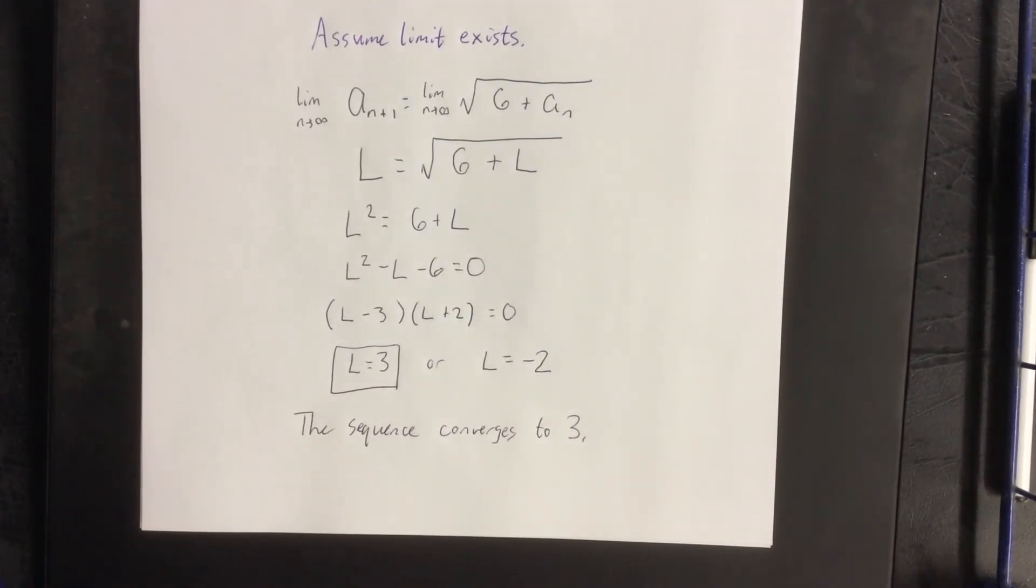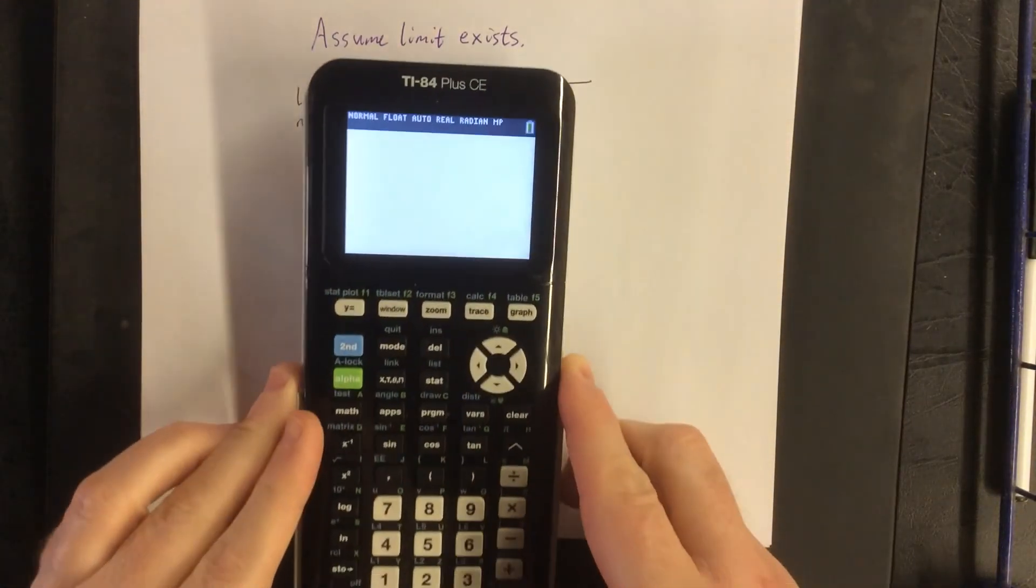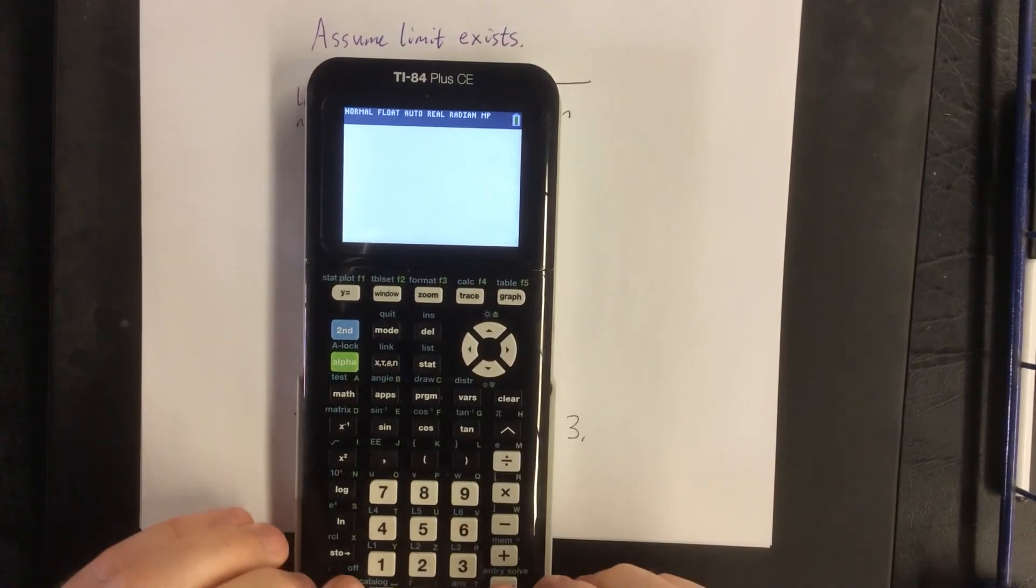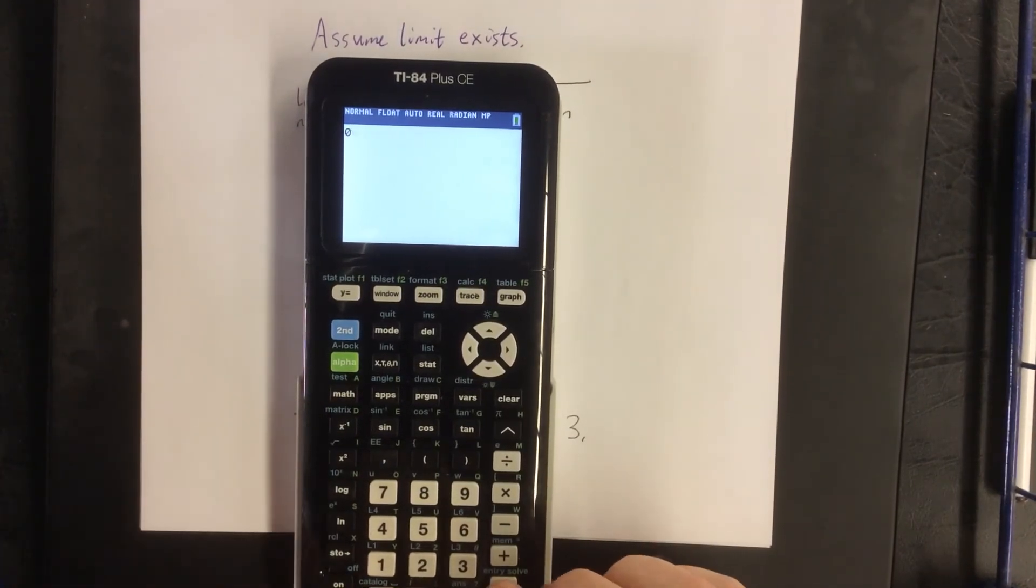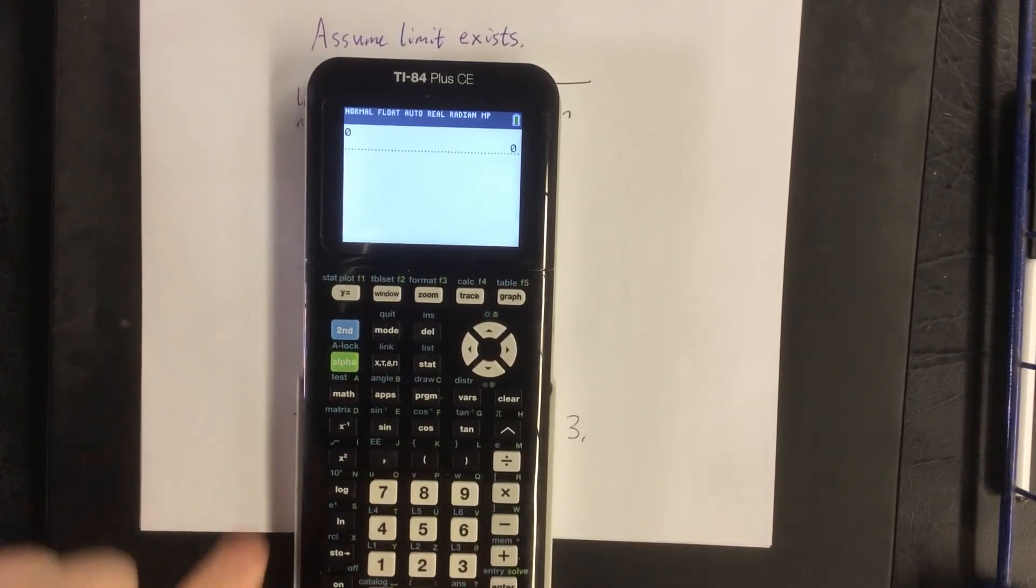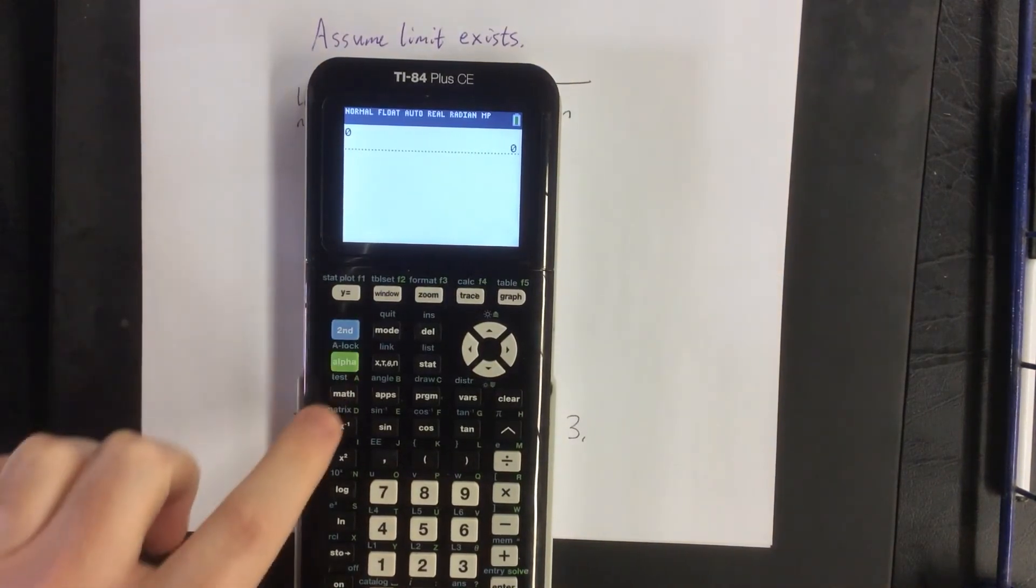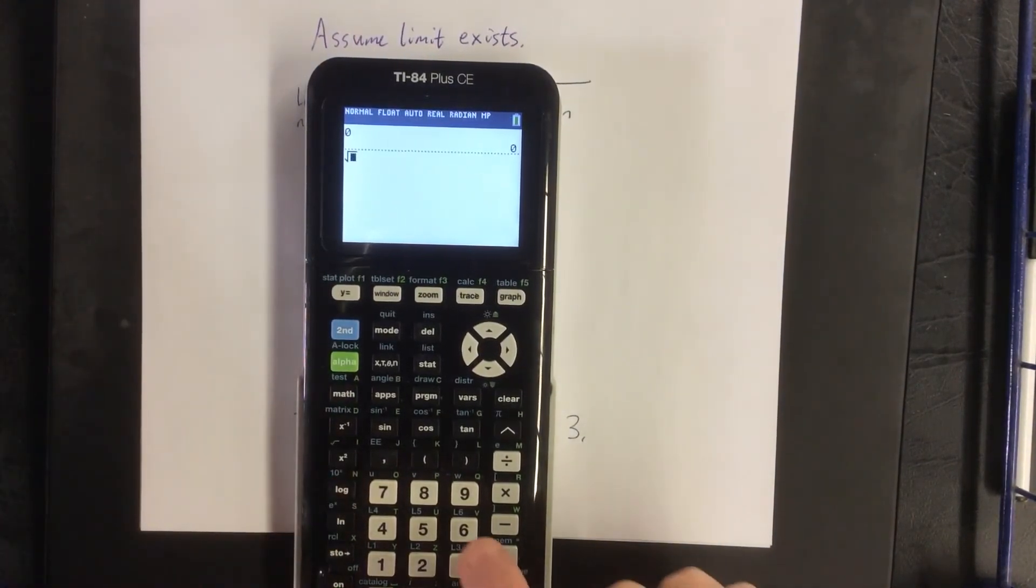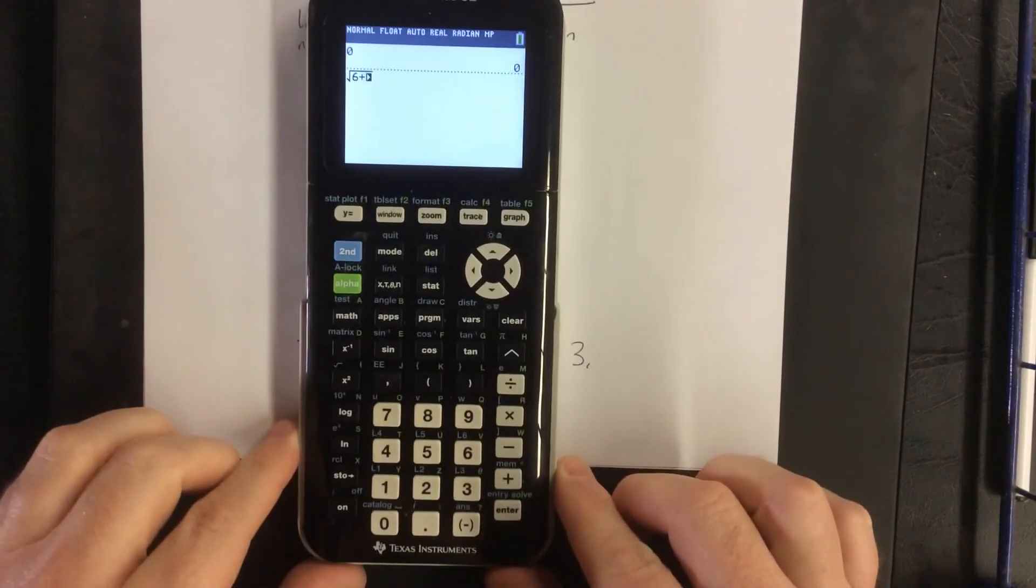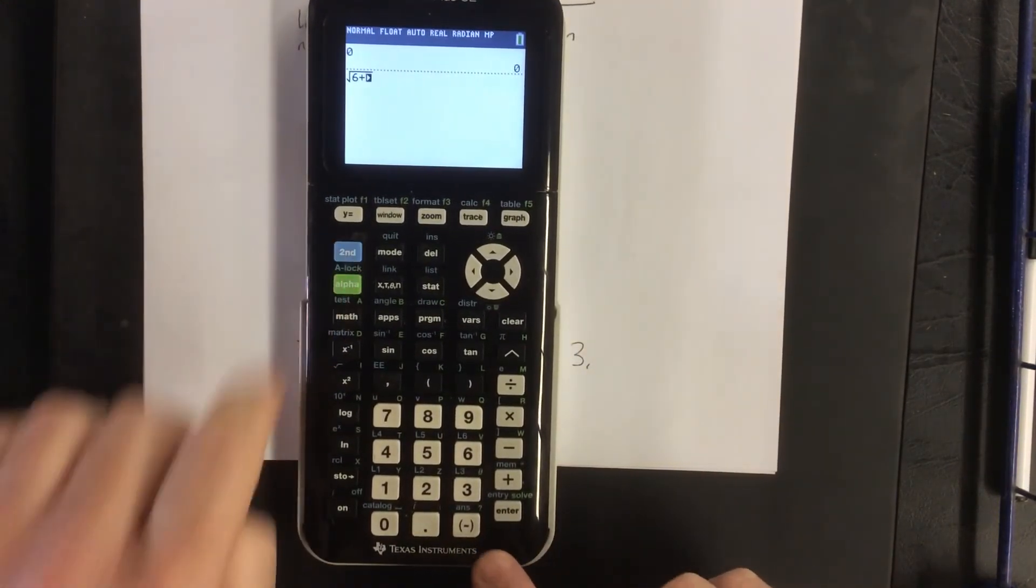Now there is another way that we can convince ourselves of the truthfulness of this statement and it'll be through the use of the graphing calculator. So what we're going to do is type in this sequence exactly. Our first term was 0. To get future terms we wanted to take the square root of 6 plus the previous statement. You can get the previous statement on your calculator by pressing second followed by the negative sign.